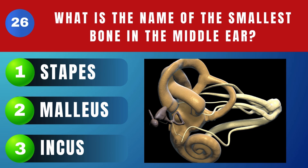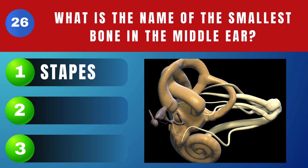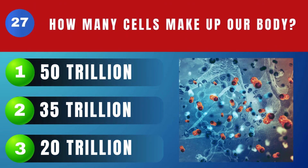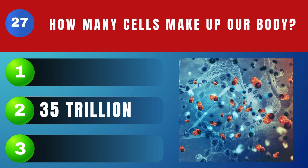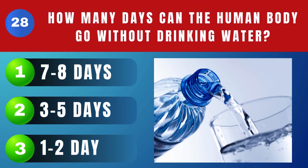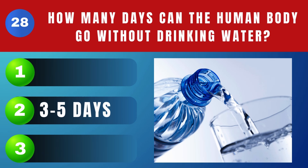What is the name of the smallest bone in the middle ear? Stapes. How many cells make up our body? 35 trillion. How many days can the human body go without drinking water? Three to five days.